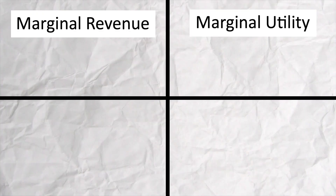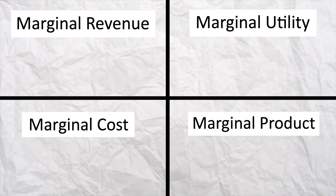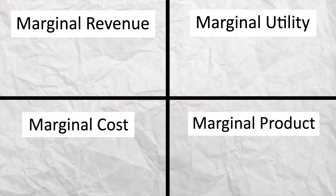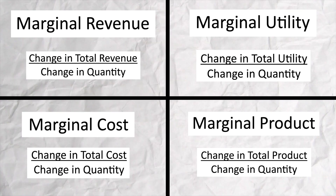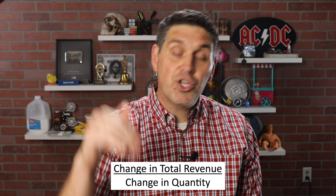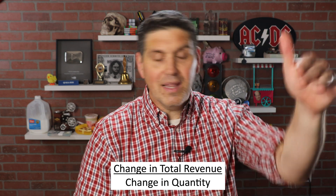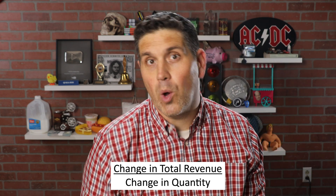Now let's talk about mirrored concepts for microeconomics. First up is calculating marginal — you're going to see it a lot: marginal revenue, marginal utility, marginal cost, marginal product. Marginals are all over the place in a microeconomics class, and the equation is identical for all of them. It's the change in total divided by the change in quantity. In most cases, the change in quantity is just one — going from 11 to 12 units — so it's really just the change in the total.